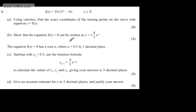This is question number 4. We're given f(x) equals 25x squared multiplied by e to the 2x minus 16, where x is a real number. In part A, it says using calculus, find the exact coordinates of the turning points on the curve with equation y equals f(x). The question carries 5 marks.